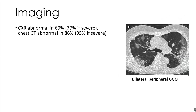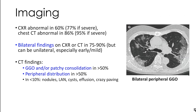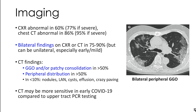In terms of imaging, chest X-ray is abnormal in about 60% of patients and 77% if they present with severe illness. The chest CT is abnormal in about 86% and 95% with severe illness. Bilateral findings are seen on chest X-ray and CT in 75-90%, but can be unilateral, especially early or with mild disease. The most common findings are ground glass opacities and/or patchy consolidations in a peripheral distribution. Less common CT findings include nodules, lymphadenopathy, cysts, effusions, or crazy paving. CT may be more sensitive in early COVID-19 disease compared to upper tract PCR testing.